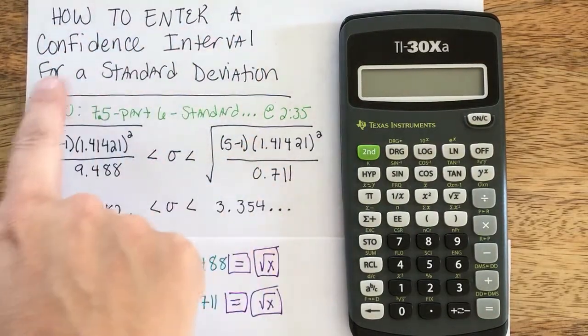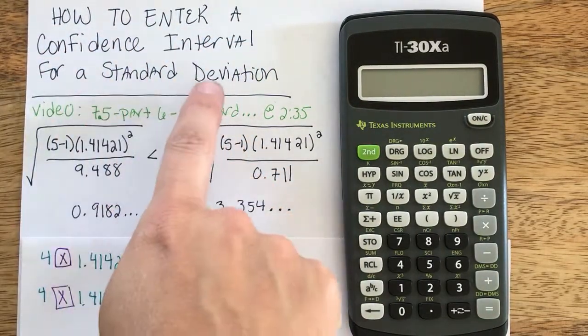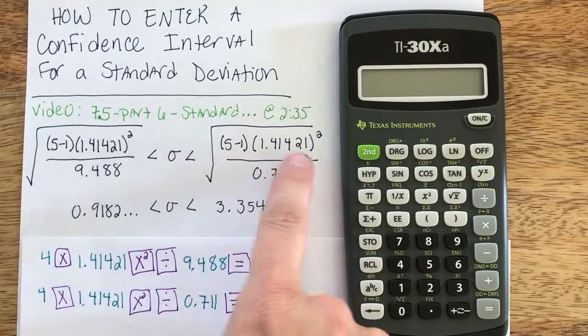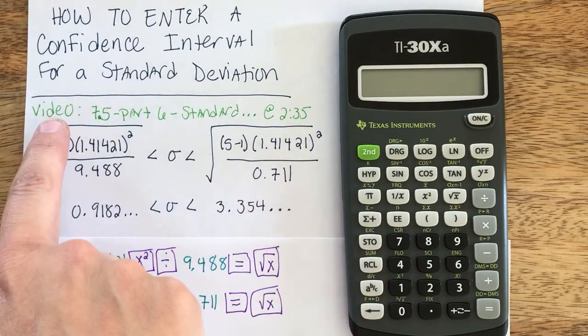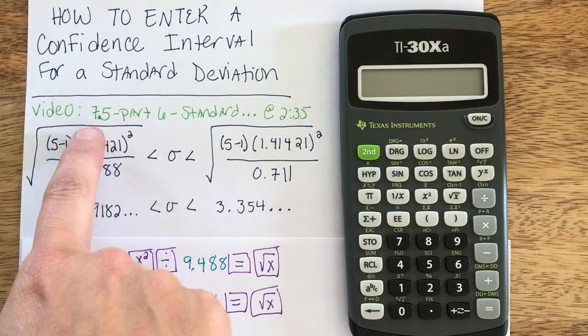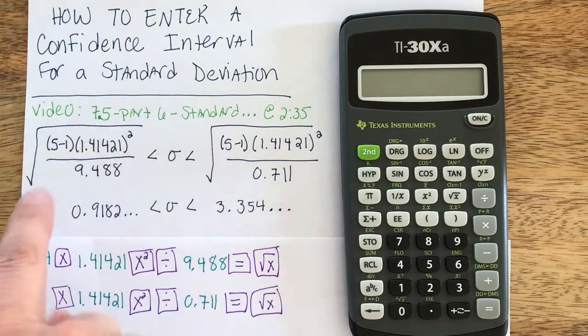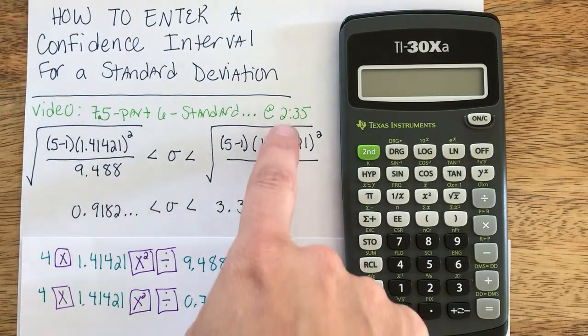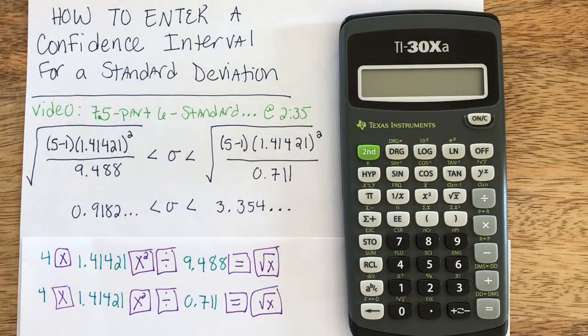Now I'm going to show you how to enter a confidence interval for a standard deviation. The problem I'm displaying I took from my video titled 7.5 part 6 standard deviation, and this problem can be found at timestamp 2 minutes and 35 seconds.